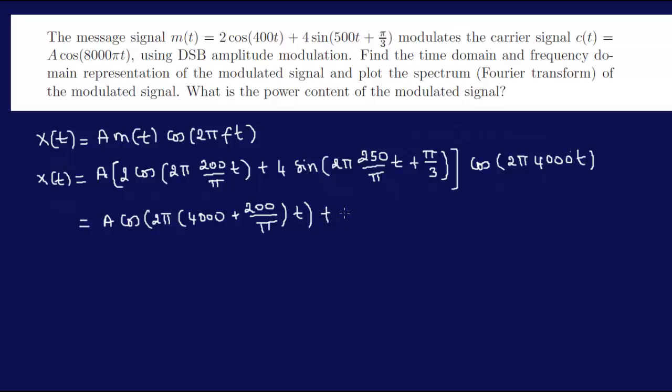Plus again a cosine of 2π, 4000, now we have a minus here, not plus, but minus 200/π*T. So I've simplified my cosine, now I'm going to deal with my sines.